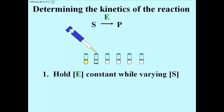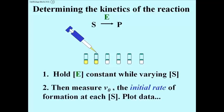We hold the enzyme constant while varying the substrate concentration in each tube, and we add the substrate and watch the conversion to product. Then we're going to measure the initial rate of the reaction at each substrate concentration, and we're going to plot the data.